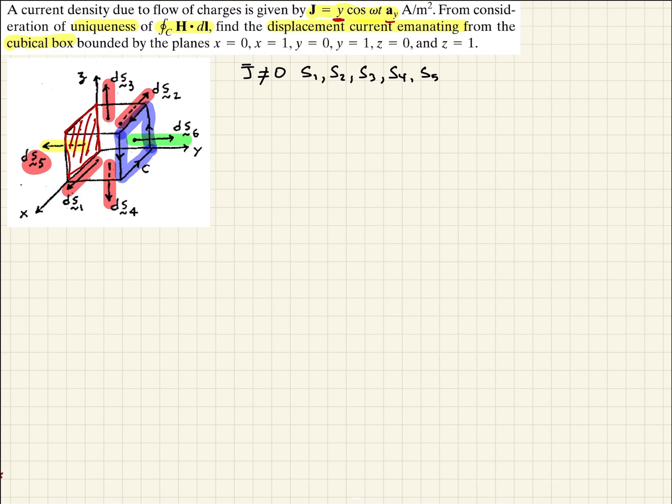And so Ampere's law then tells us that the integral around some contour of the magnetic field's intensity around some line integral, vector line integral defined there, is going to be equal to the current density minus the time derivative of the integral over some surface of the current displacement over some surface here.